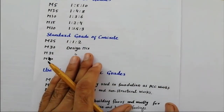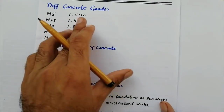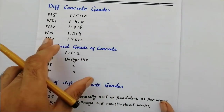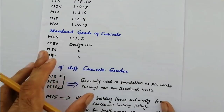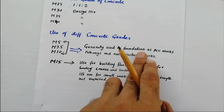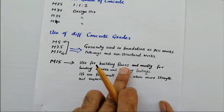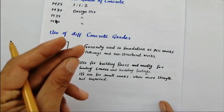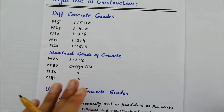I hope you don't have any remaining questions. If you do, please comment below. These are very important notes for every civil engineer. To summarize: M5, M7.5, and M10 can be used in foundation PCC works; M15 can be used for building floors but not for beams, columns, and slabs; M15 can be used for small works.